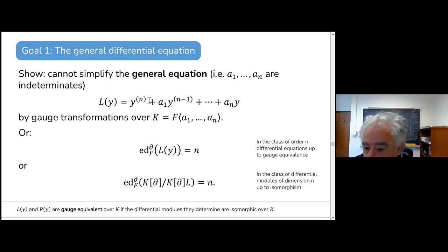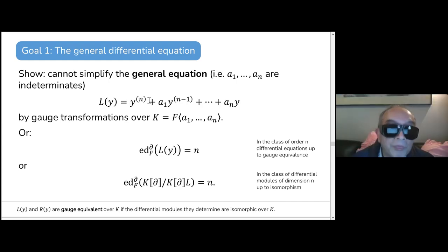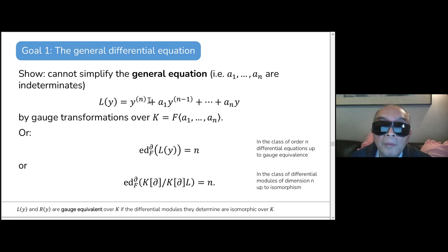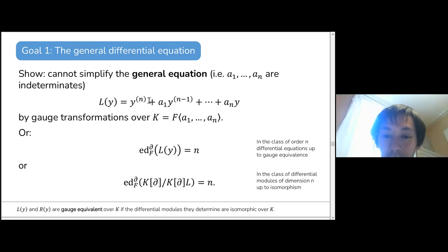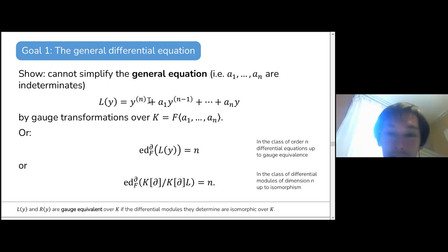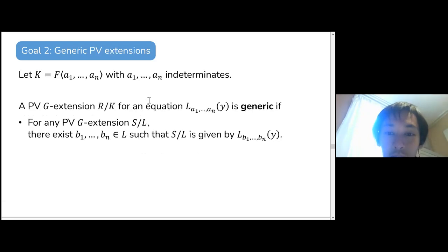A₁ through Aₙ are precisely differential transcendentals over F — that is what 'indeterminates' means here. There is still a distinction between differential indeterminates and a family being transcendental over a particular field. The first goal is that the differential essential dimension of GLN torsors is N; the second goal involves generic Picard-Vessiot extensions studied by Juan, Lade, and Magid.